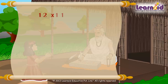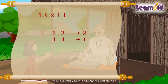Let's multiply 12 by 11. Because the numbers are greater than base value 10, we will write the surplus value. 12 is 2 more than 10, so we will write plus 2. 11 is 1 more than 10, so we will write plus 1. Now we will follow the same rules.